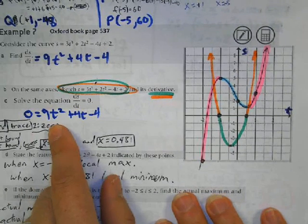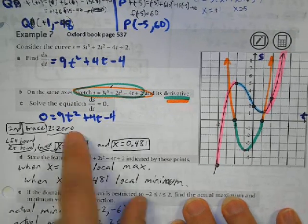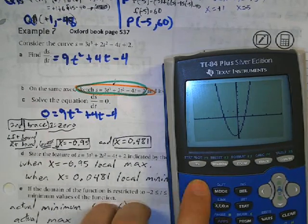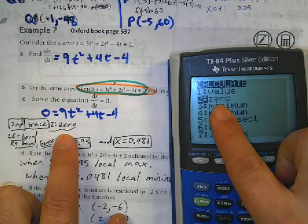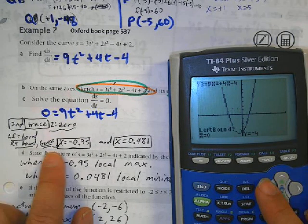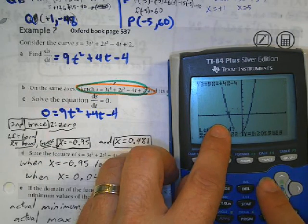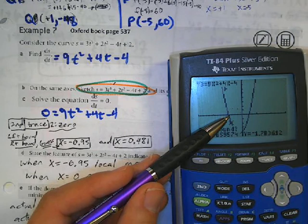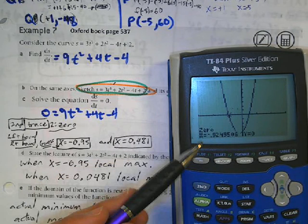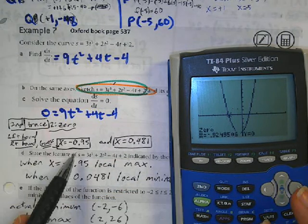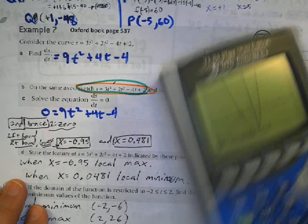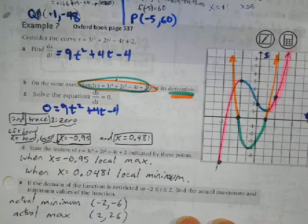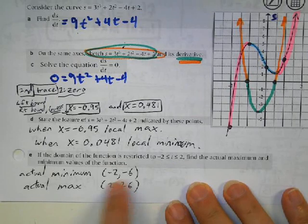To find where the derivative equals zero on the calculator, hit second trace and select zero. Set the left bound to the left of the intersection, hit enter, then move to the right bound and hit enter again. This gives the intersection at negative 9.25. Use the same process for the other x-intercept. You can tell one is a maximum and the other is a minimum, and given the restricted domain, these are the minimum and maximum values.